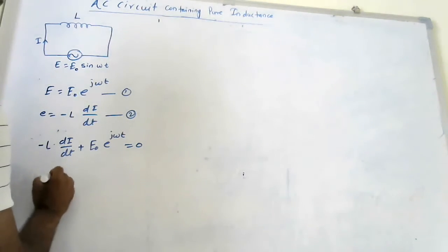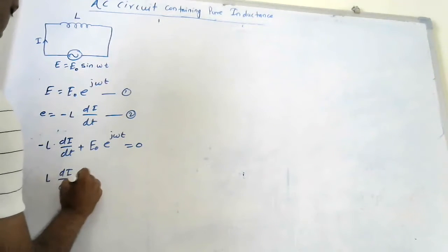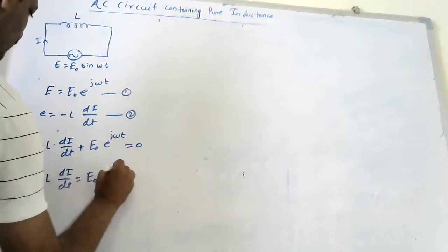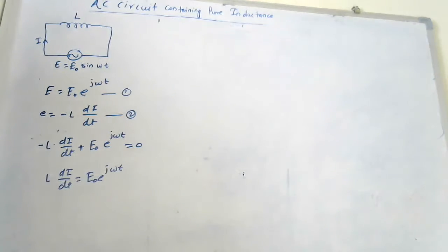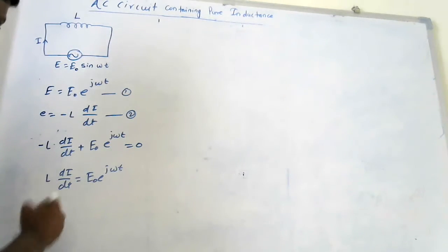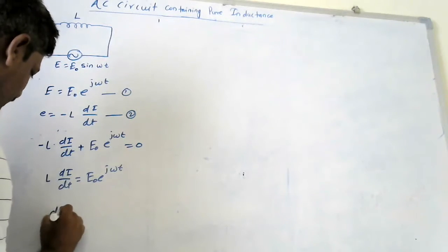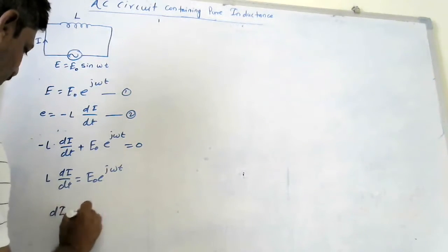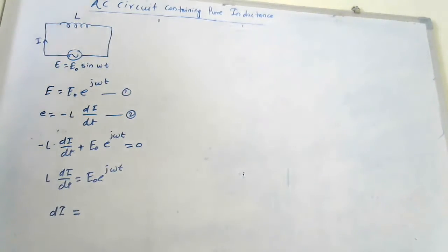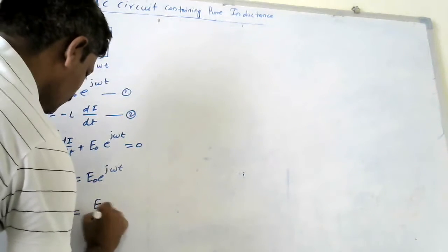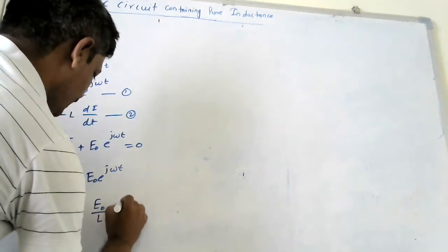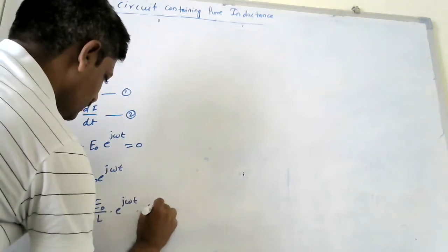We have to simplify and rearrange this expression. Taking only dI on the left-hand side and moving the remaining terms to the right-hand side, we get: dI equals to E0 upon L into e to the power jωt into dt.